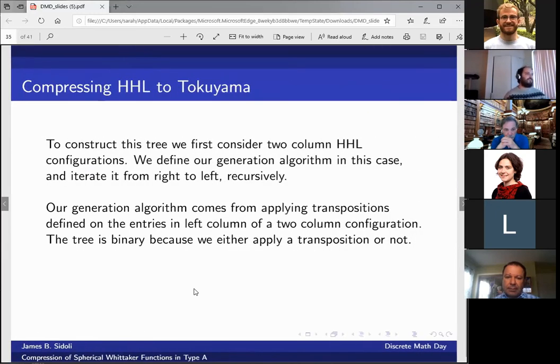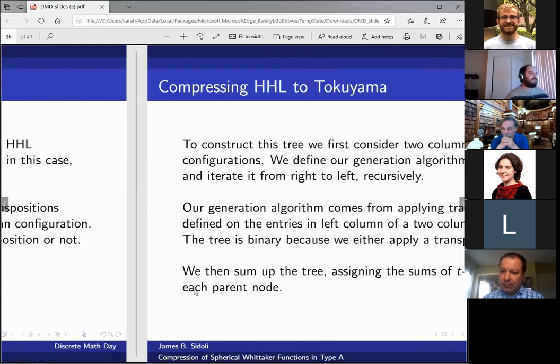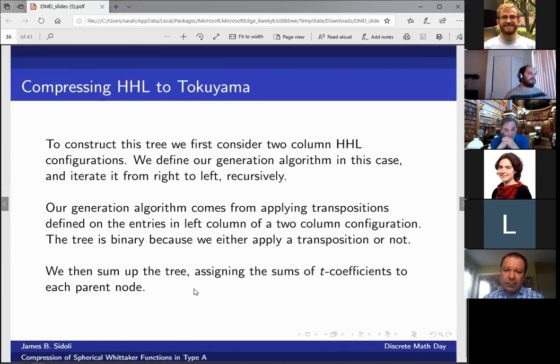So we do this by applying transpositions defined on the entries in the left column. So we're fixing a right column and we're applying transpositions to the left column from this sequence of transpositions under certain conditions. And this tree is binary because we can either apply a transposition or not. We then sum up the tree, assigning the sums of these t coefficients to each parent node and work our way up the tree in that fashion.